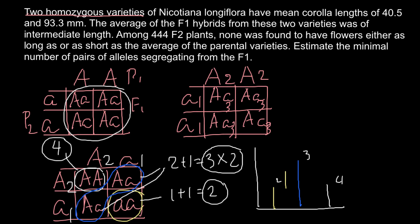The more results we collect, the more the distribution looks like a bell curve — fewer results at the extremes and more near the average. You can see this in daily life: if you look at the people in your university or class, few will be very short, few very tall, but most will be of average height. This applies to almost any quantitative trait, such as fruit size.